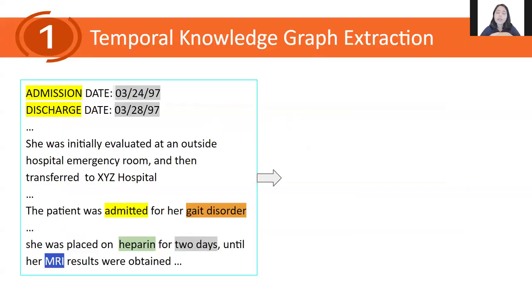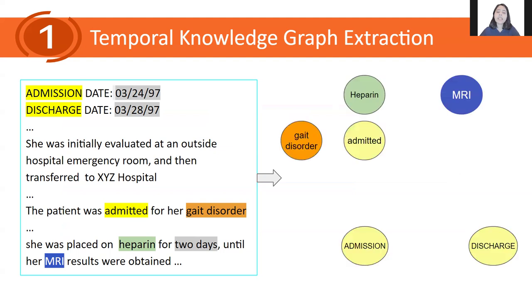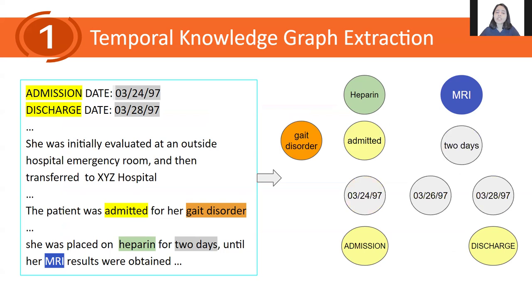To answer our first question, we focus on extracting temporal knowledge graphs from clinical notes, where the nodes can be clinical events such as treatment, procedure, problem, occurrences, and time expressions such as date or duration. Edges represent temporal relations — before, after, and overlap — between a node pair.